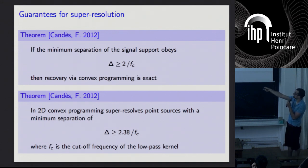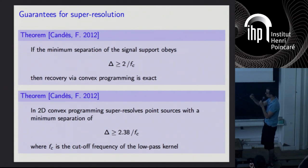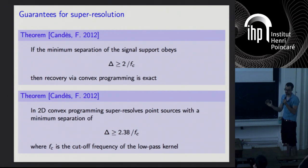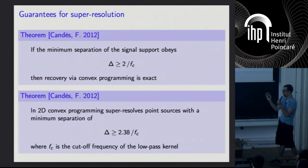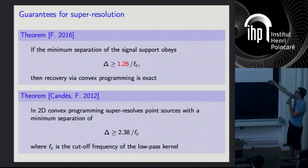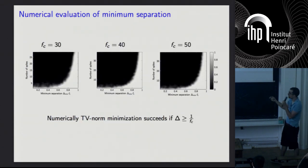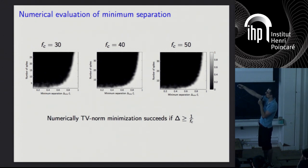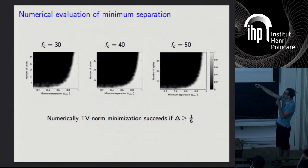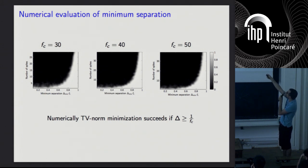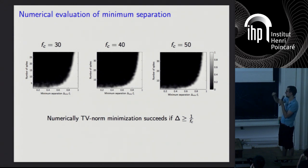We know this isn't completely tight because the problem is well posed above 1/fc. In another paper, I sharpened the result to 1.26/fc. In numerical simulations shown as heat maps — where black means the method fails to recover the true solution and white means it works — we see that the method appears to work as soon as the separation exceeds 1/fc. We conjecture that's the right separation, but we've only managed to prove down to 1.26/fc.